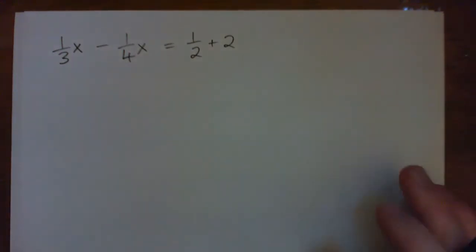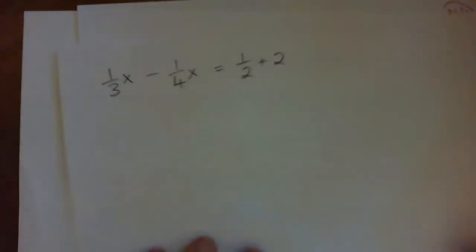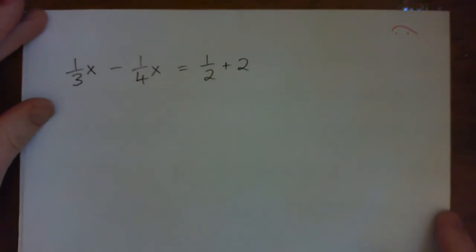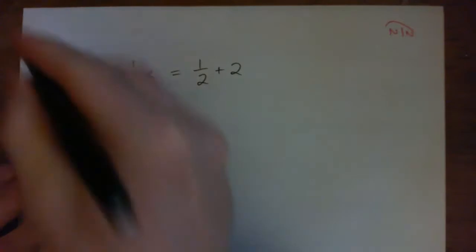Hi everyone, so we have one third x minus a quarter x equals a half plus two. The goal is to figure out what number do I plug in for x to make the equation true.